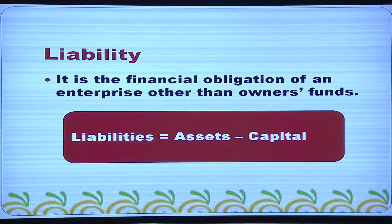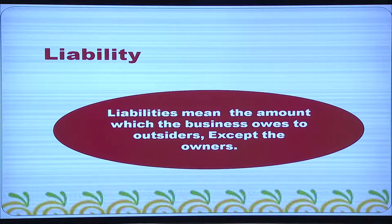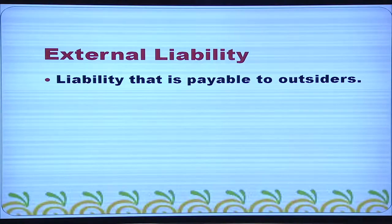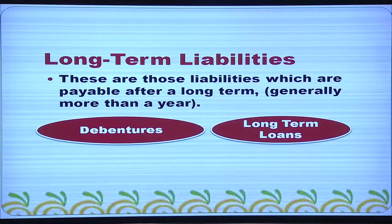Liability is the financial obligation of an enterprise other than owners' funds. Liability equals assets minus capital. Liabilities mean the amount which the business owes to outsiders except the owners. External liability is that payable to outsiders other than the owners. Long-term liabilities are those payable after a long term, generally more than one year — debentures, long-term loans, etc. are examples.